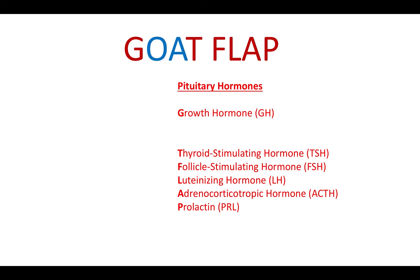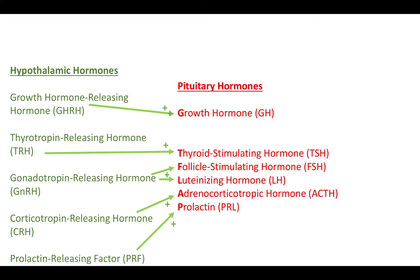Growth hormone, thyroid-stimulating hormone, follicle-stimulating hormone, luteinizing hormone, adrenocorticotropic hormone, and prolactin — their release from the anterior pituitary is influenced by hormones from the hypothalamus. For instance, growth hormone-releasing hormone stimulates the release of growth hormone from the anterior pituitary, shown here with a green arrow and green plus sign indicating stimulation.